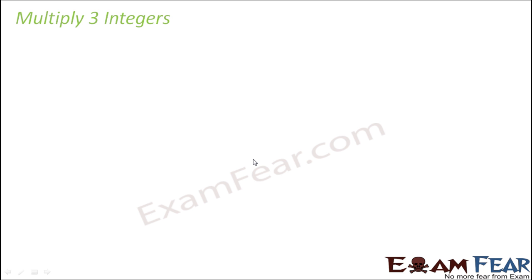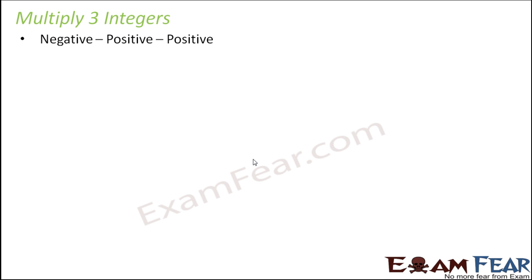Let us now see how we multiply three integers. Till now we have learned about handling two integers at a time — a positive integer with a positive integer, a positive integer with a negative integer, or a negative with a negative integer. Let's see how we handle three integers at a time, and here also we will take different scenarios.